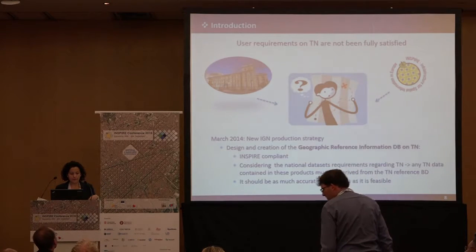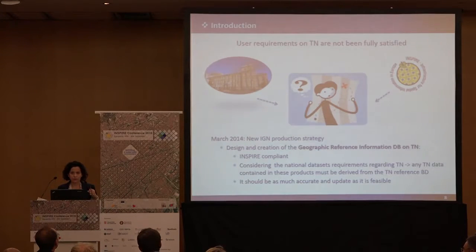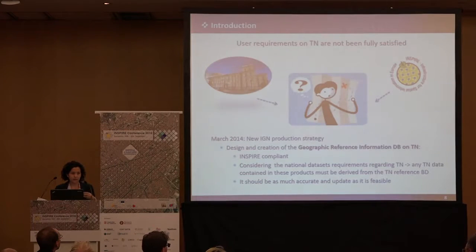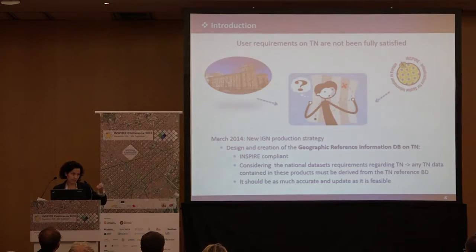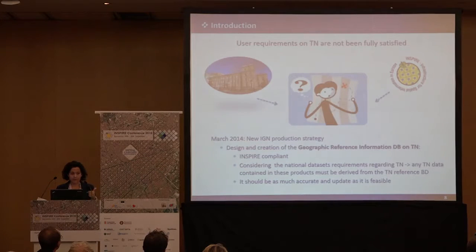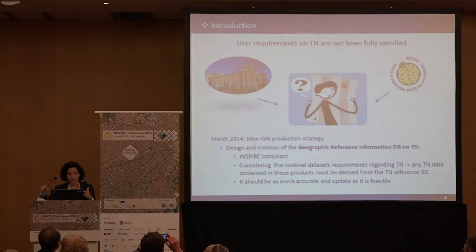In March 2015, IGN of Spain decided to undertake a new production strategy. It consists of designing and creating the geographic reference information on transport. This database has to be INSPIRE compliant, of course. But also, in the definition of the data model, we have to consider all the national dataset requirements regarding transport.